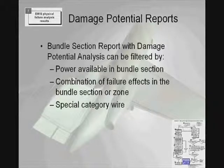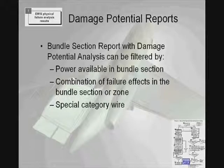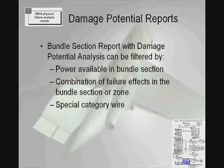As mentioned before, the damage potential report is integrated with the bundle section report, but can also be run separately, and can be filtered by the amount of power available in the bundle section. It can also be filtered by such things as a combination of failure effects within the bundle section, a particular zone, or if there is a special wire category defined within that bundle section.